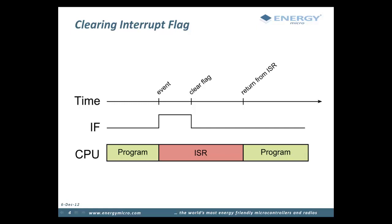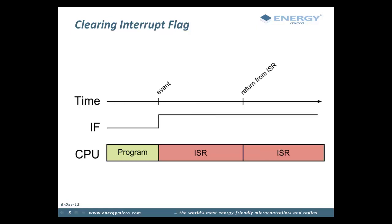Now let's have a look at what happens if the interrupt service routine does not clear the flag. In this case, when the ISR returns, the interrupt controller will see that the flag is set and will then trigger another interrupt. If the interrupt service routine never clears this flag, the code will be stuck in an endless loop and the program execution will never return to the normal program flow.